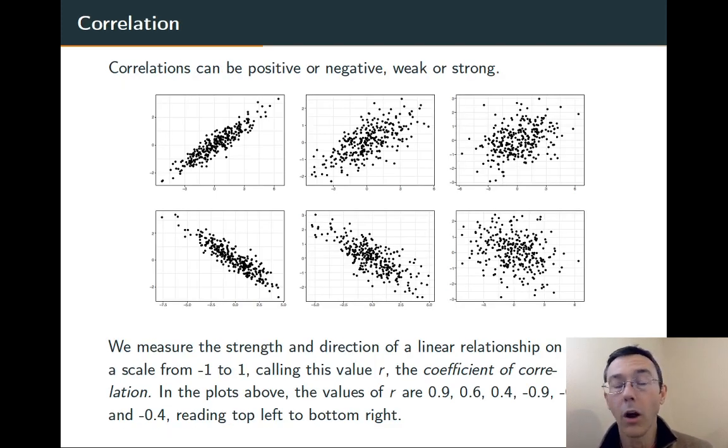Correlations can be weak or strong, positive or negative. Positive means as you read from left to right, the general shape of the graph goes up. And negative means as you read from left to right, the general shape of the graph goes down.